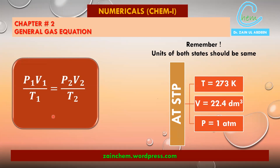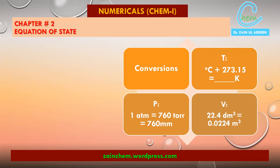This is the general gas equation summary. For unit conversions: to convert atmospheres to torr, multiply by 760; to convert torr to atmospheres, divide by 760. For volume, 22.4 dm³ equals 0.0224 m³ or 22,400 cm³. To convert dm³ to m³, divide by 1000; to convert to cm³, multiply by 1000.